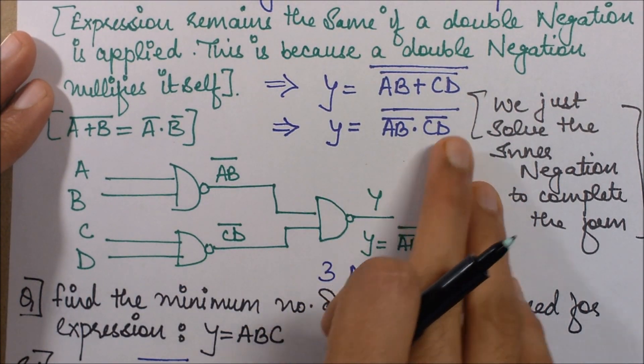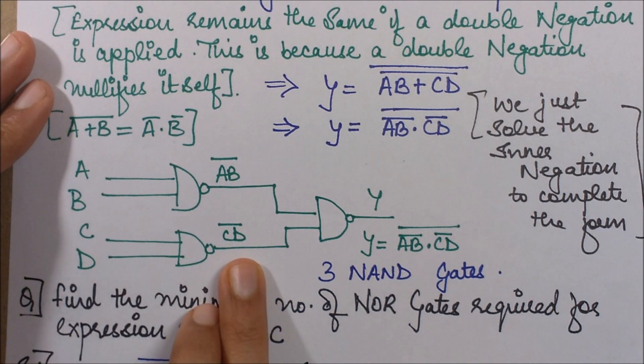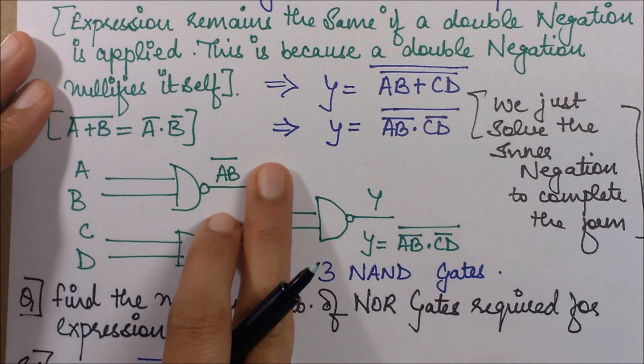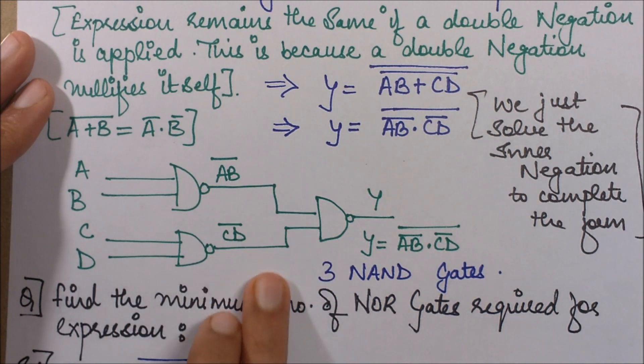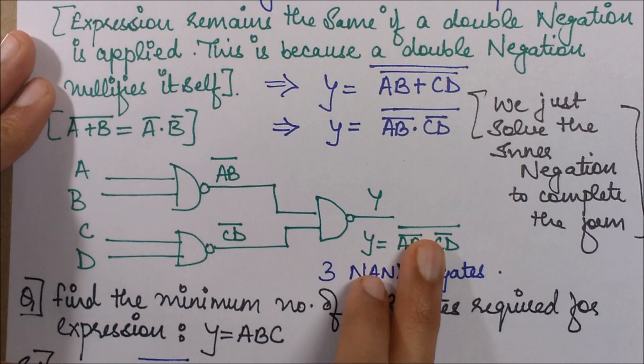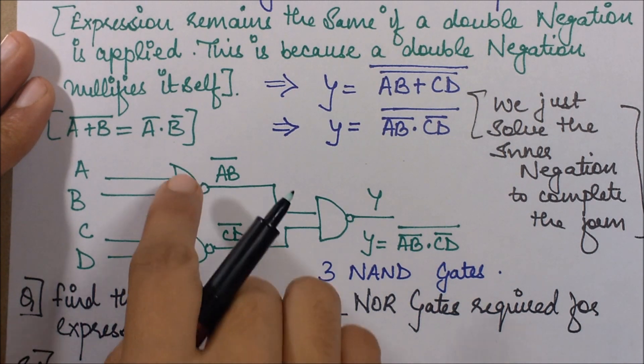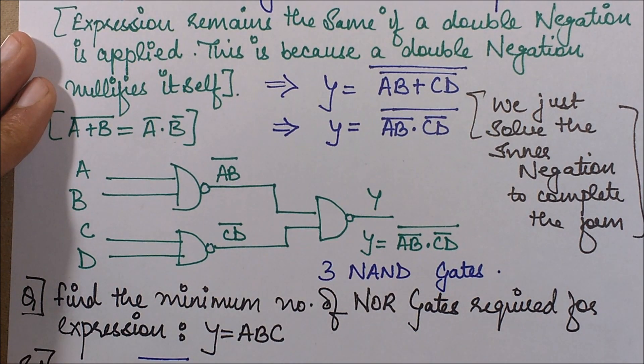So this is the circuit that we obtain by forming, by putting the inputs AB, we get this AB bar. By putting the input CD, we get this CD bar. And then giving these outputs obtained from here as inputs to this final NAND gate, we get our final expression. So quickly if we see how many NAND gates did we finally require to formulate this expression, we get to know that we got three NAND gates.